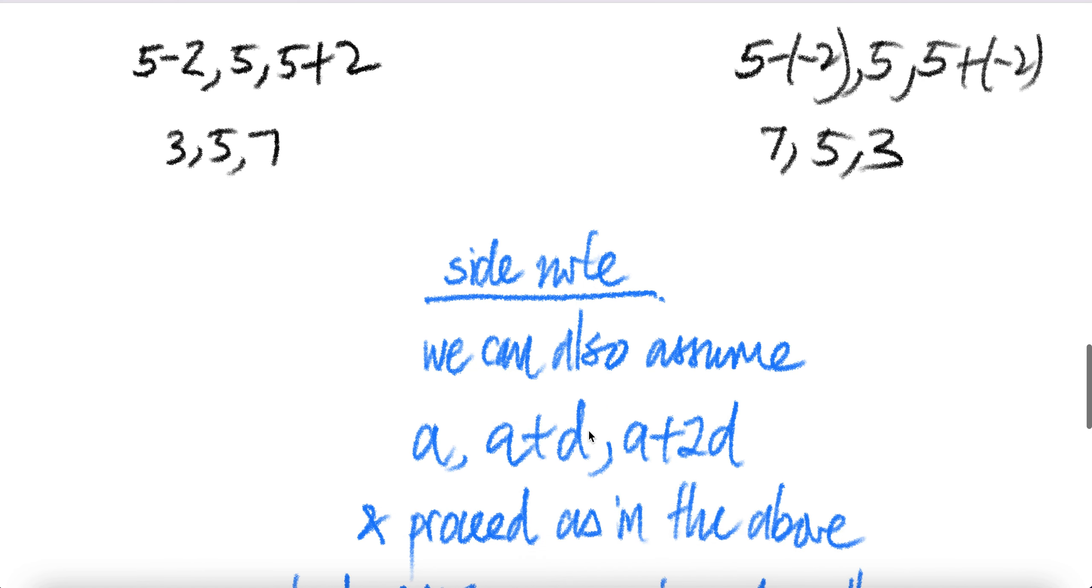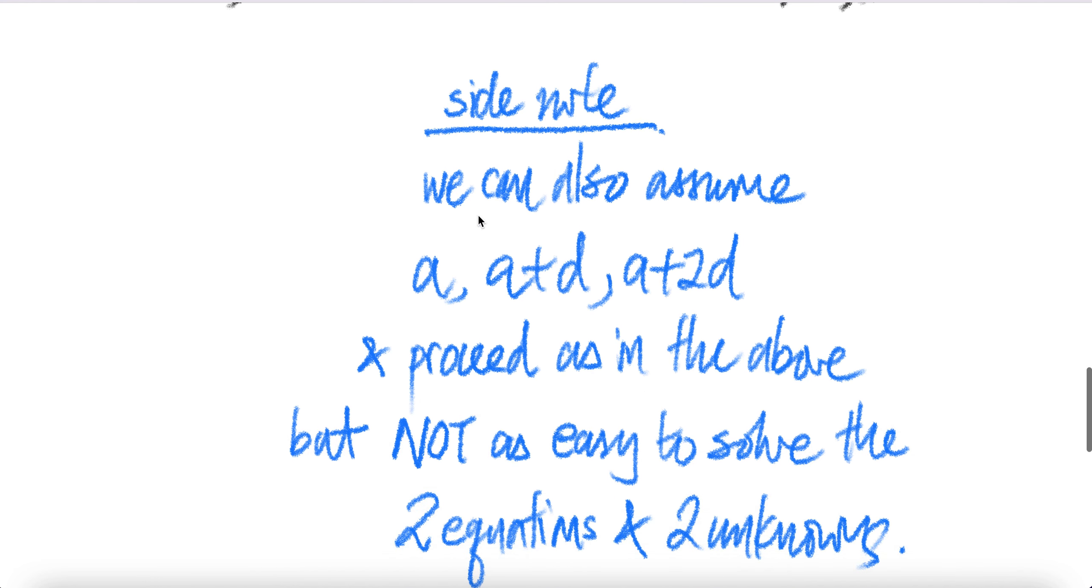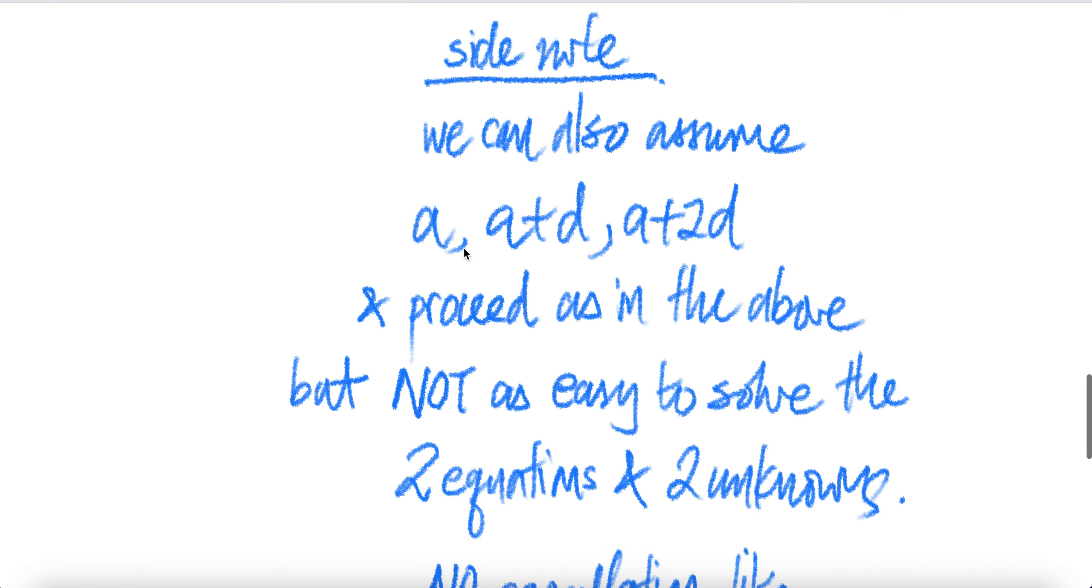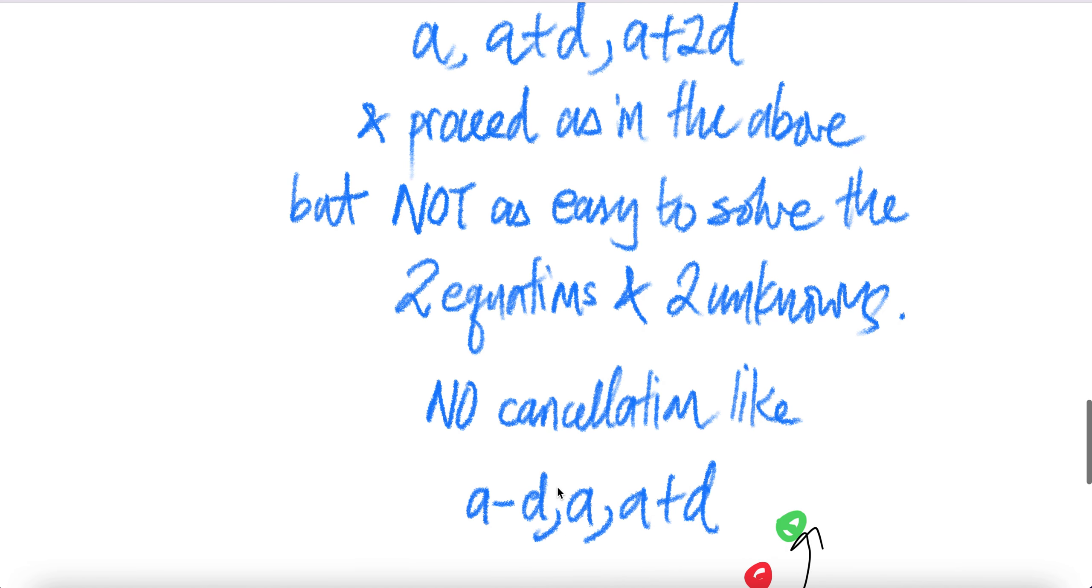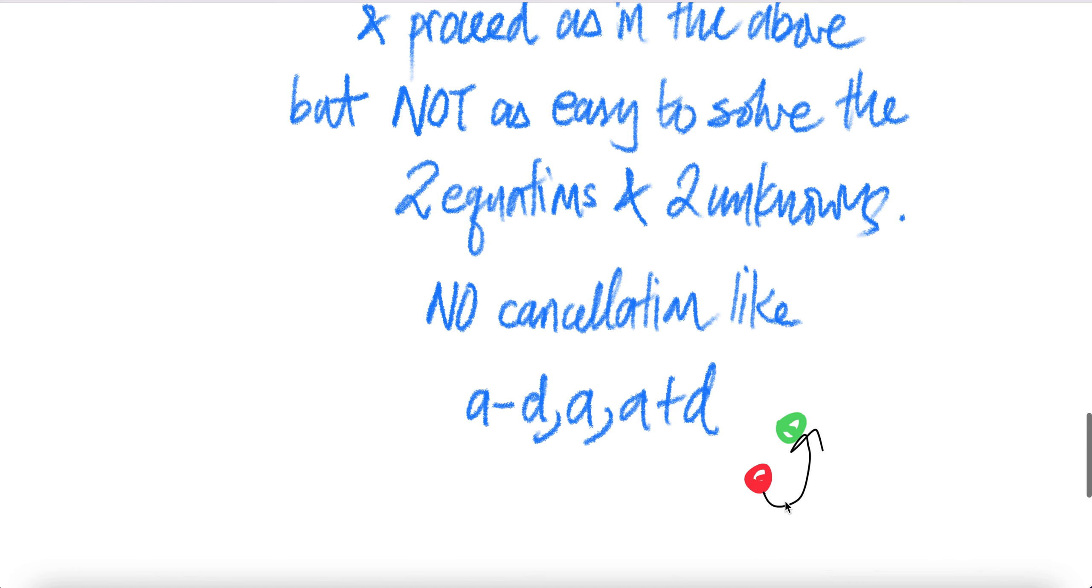Side note, we can also assume, instead of assuming A minus D, A and A plus D, we can also assume that and proceed as in the above. But in this formulation, it's not easy to solve the two equations and two unknowns. Since there's no cancellation like this, right? When you add them, this cancels, you get 3A equal to whatever given.